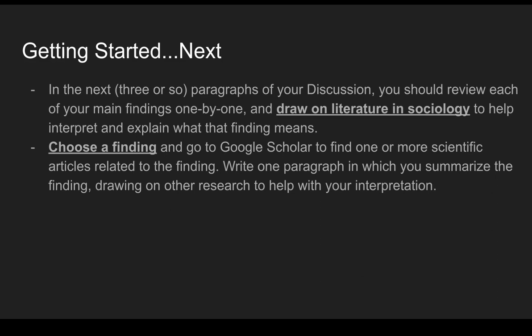To do this, choose one of your findings and go to Google Scholar and find one or more scientific articles that relate to that finding, because you can find other research to help you interpret and explain your own research findings. Then write one paragraph in which you summarize that finding, drawing on other research to help with your interpretation.